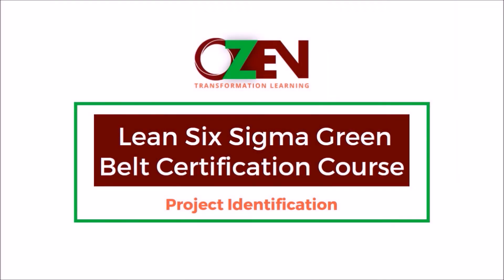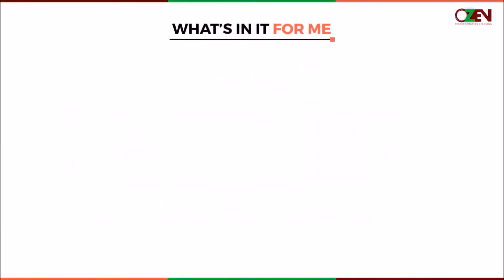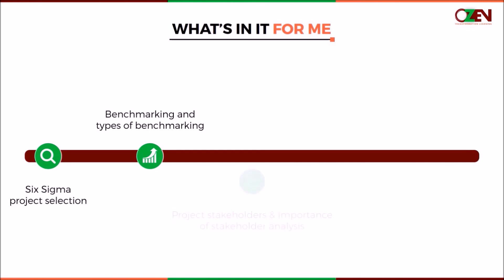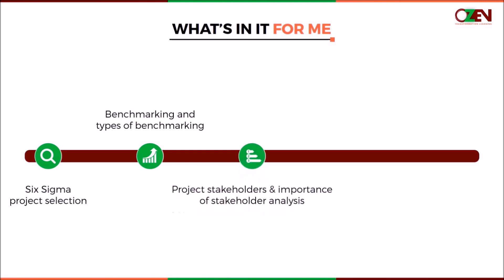Welcome to the lesson Project Identification of the Lean Six Sigma Greenbelt Certification Course. This lesson will cover project identification in the define phase, and will take you through the following topics: the process of selecting a project for Six Sigma, the need for benchmarking, the need to identify project stakeholders, and the importance of stakeholder analysis.